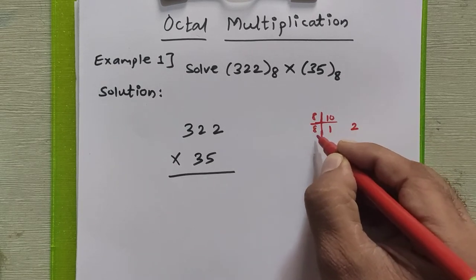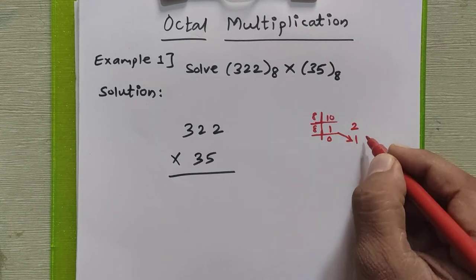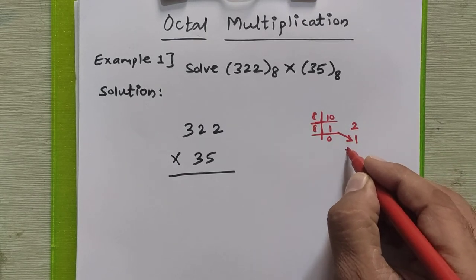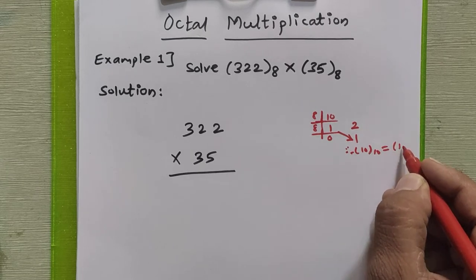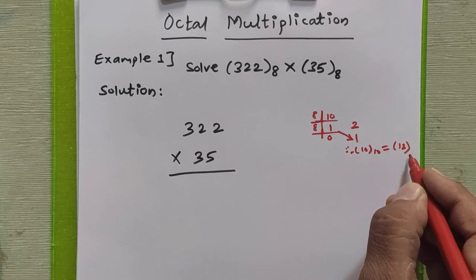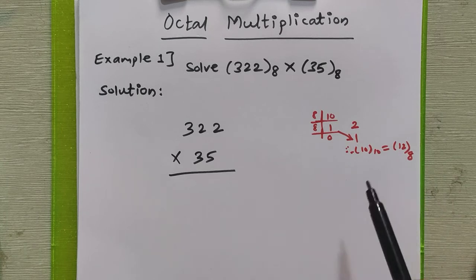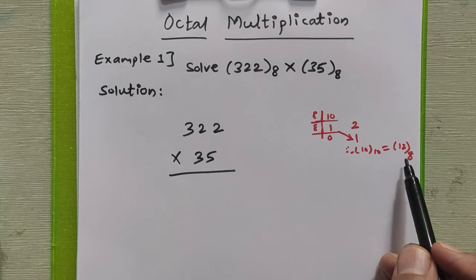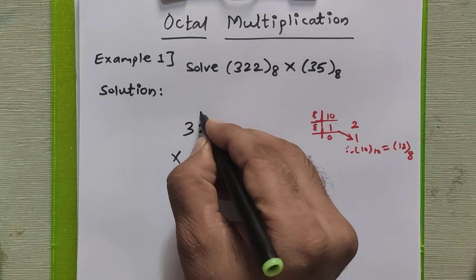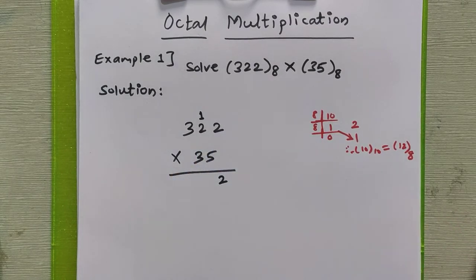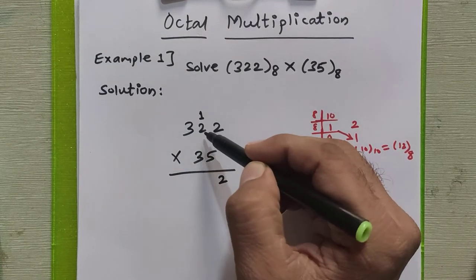When you divide 1 by 8, you get quotient 0 and remainder 1. Therefore, 10 decimal is equal to 12 in octal. Out of this 12, we write 2 here and carry 1 is given to the next calculation. Now we multiply 5 with the next 2: 5 into 2 is 10, plus carry 1 is 11. Convert 11 into octal.